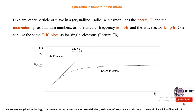A plasmon can be identified like any other particle or wave in a crystalline solid. It has energy E and momentum p as quantum numbers, where the circular frequency ω = E/ℏ and the wave vector k = p/ℏ. This is how we can identify plasmons with the help of quantum numbers.